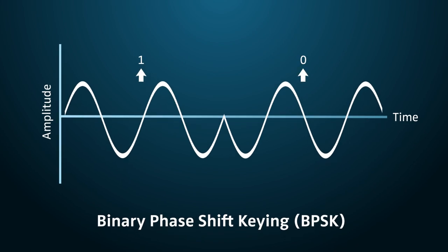Each state of the carrier wave is referred to as a modulation symbol. Since one bit of data is transmitted per modulation symbol, we can say that the bit rate equals the symbol rate in BPSK.